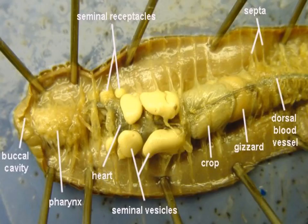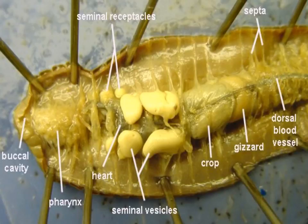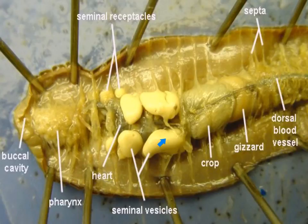The earthworms are hermaphroditic, and the male structures consist of three pairs of seminal vesicles, two pairs of testes, and a pair of sperm ducts. The seminal vesicles are large structures located on either side of the esophagus from segment 9 through 11. However, the last pair are very large and may extend up into segment 14.